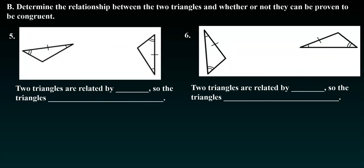So we have some more of these to try. Go ahead and look at number five and see if you can figure out which one of those it is and then check and see how you did. So hopefully you found that the two triangles are related by angle-side-angle, so the triangles can be proven congruent.